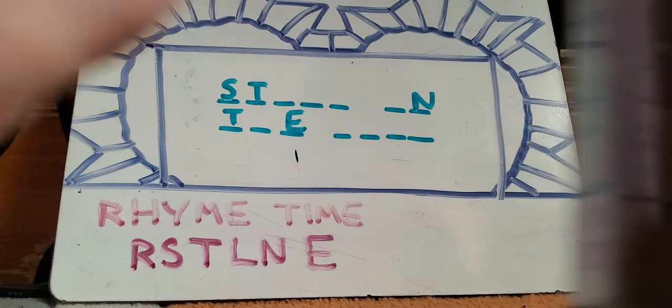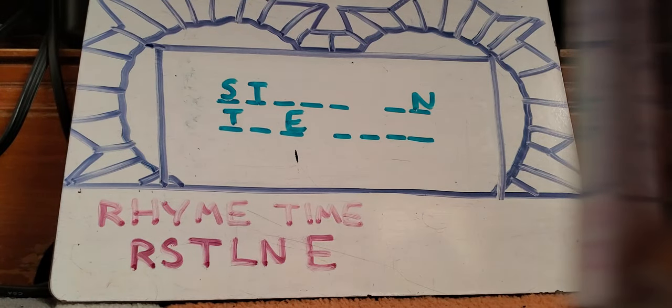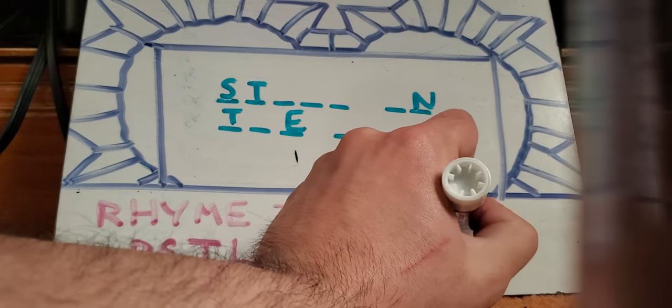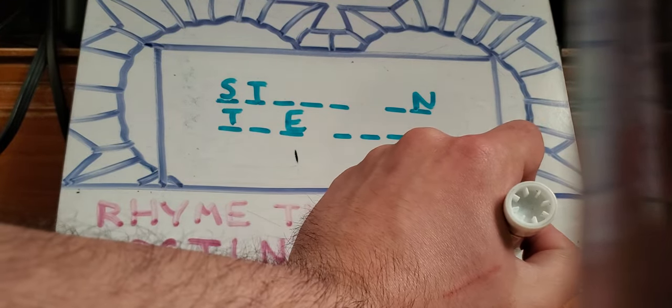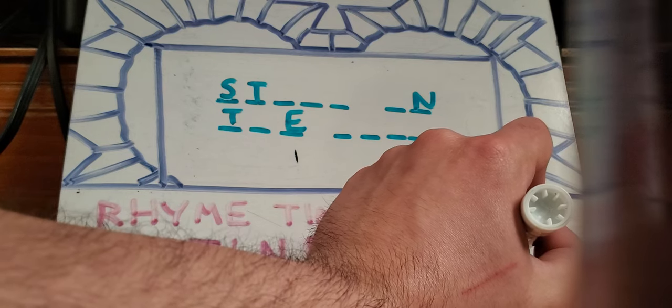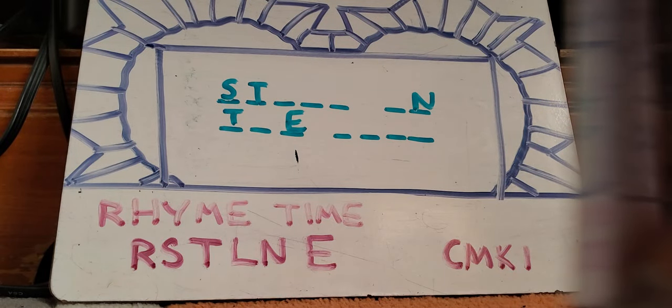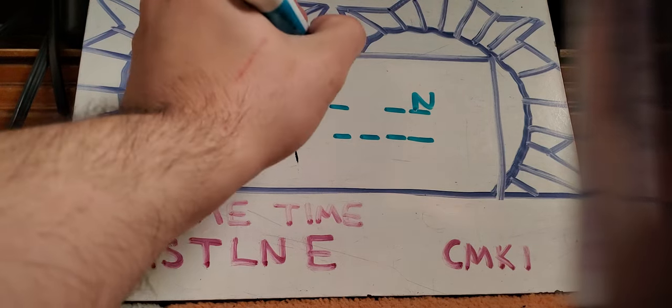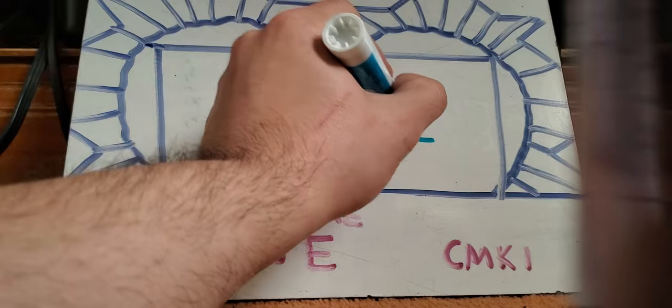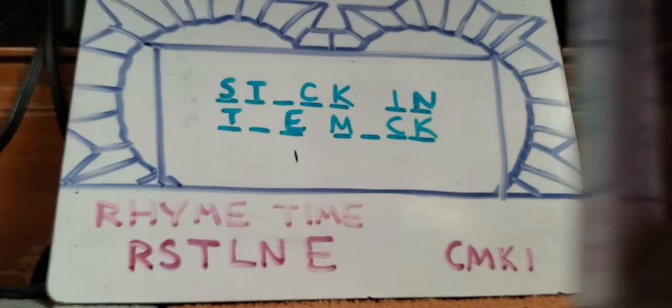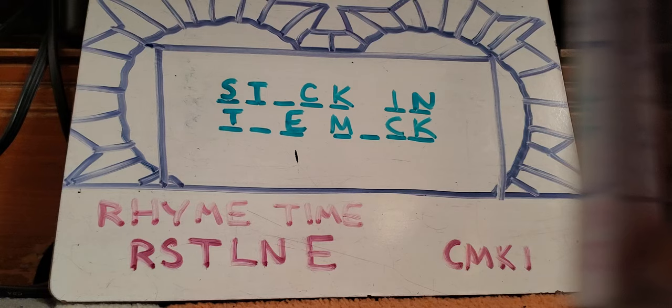Alright, three more consonants and a vowel. C, M, K, and an I. Alright, see if this might help you. Home viewers, please do not assist here. Rhyme time. Stuck in the muck. And she didn't even start the timer, got it right on the nose.